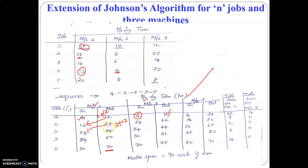The next job is getting freed from machine 1 only at the end of the 24th minute. As stated in the Johnson's algorithm, the machine-in time will be the maximum of the machine-out time of the previous job and the machine-out time of the current job in the previous machine. Comparing 24 and 16, the maximum value is 24. So job 2 enters machine 2 at the end of the 24th minute. Job 2 requires 8 minutes in machine 2, so 24 plus 8 is 32. At the end of the 32nd minute, machine 2 is free.